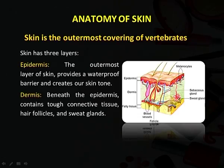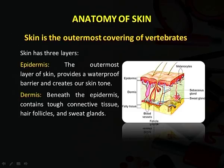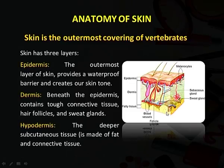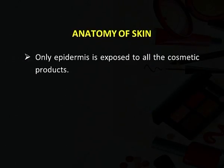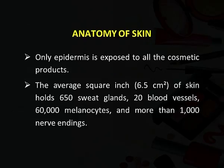The next layer is called the dermis, beneath the epidermis. It contains tough connective tissues, hair follicles, sweat glands, etcetera. The lowermost portion of the skin is called the hypodermis, which is further deeper and contains mainly fat tissues and connective tissues. Only the epidermis is exposed to all cosmetic products. An average square inch of skin holds about 650 sweat glands, 20 blood vessels, 60,000 melanocytes, and more than 1,000 nerve endings.